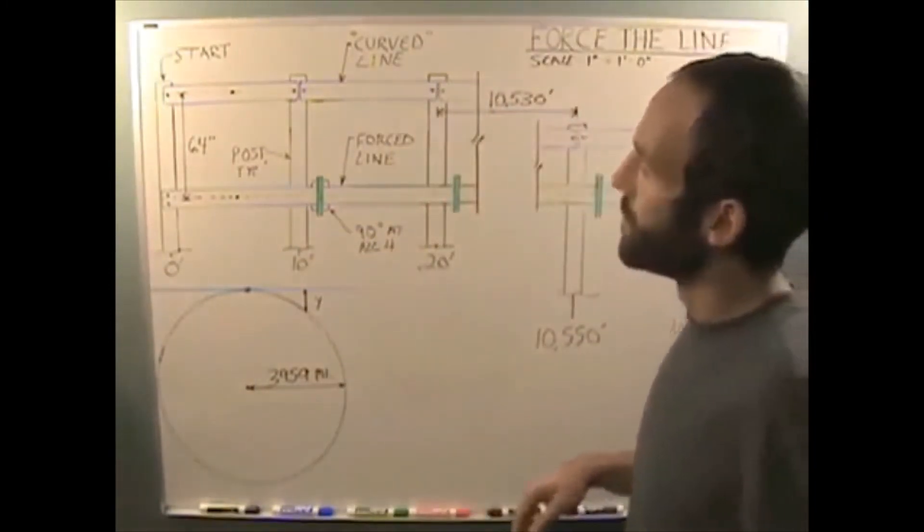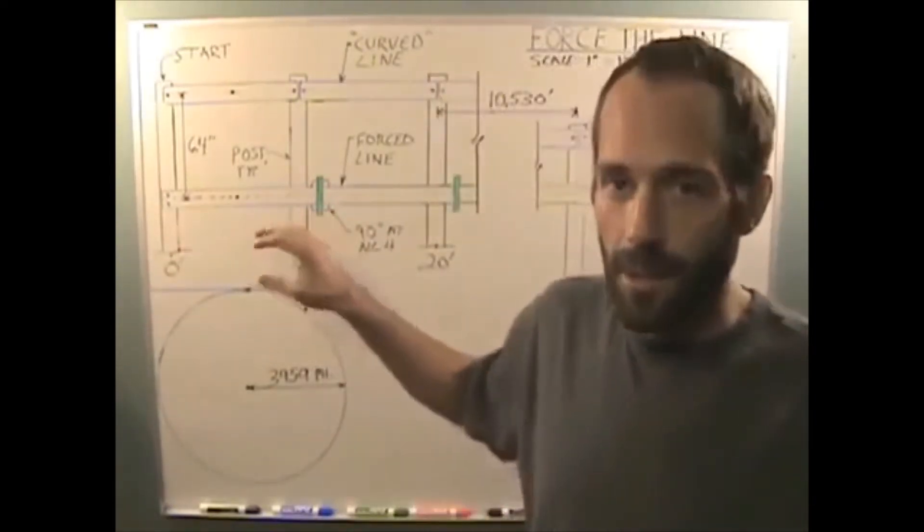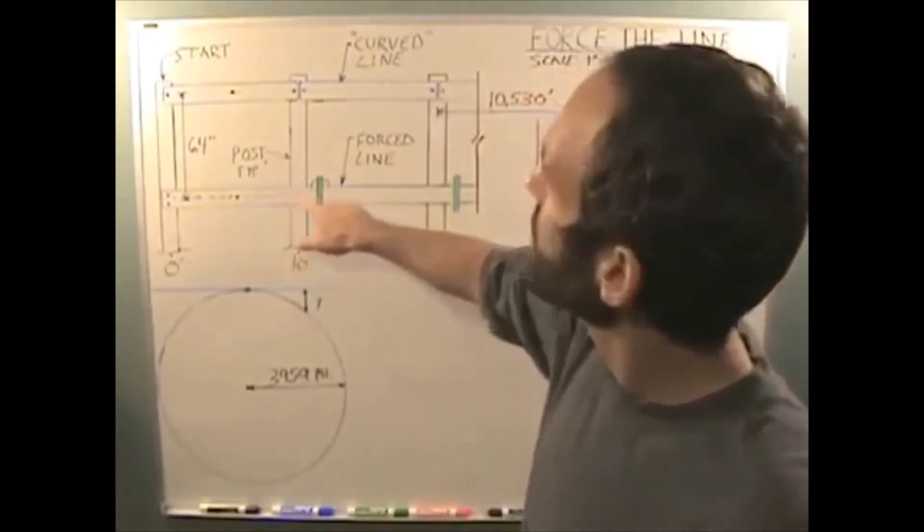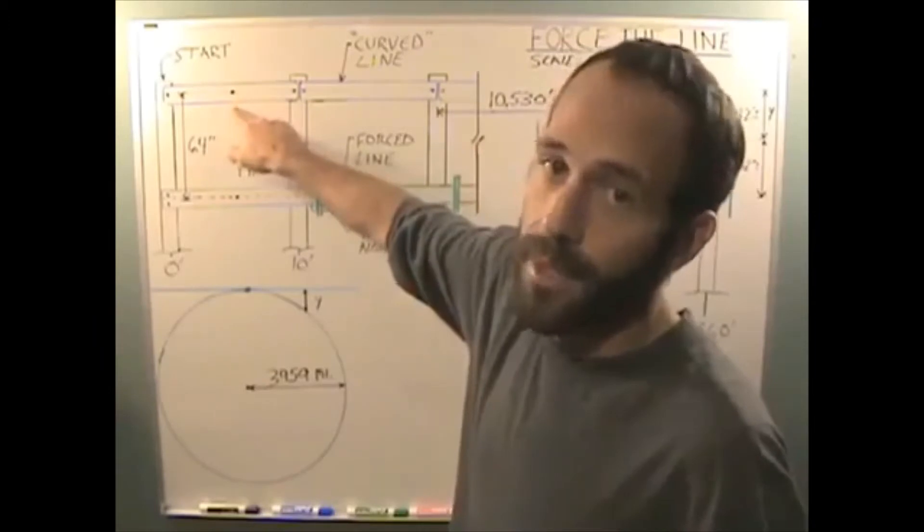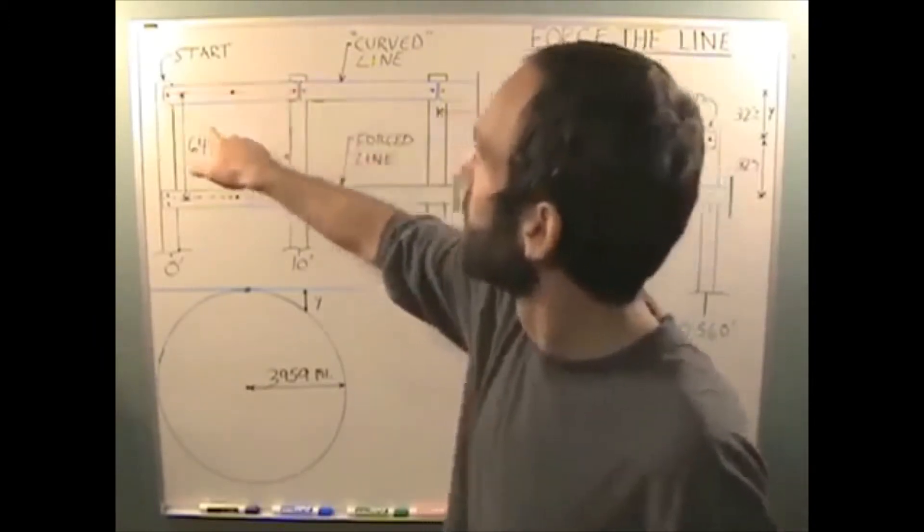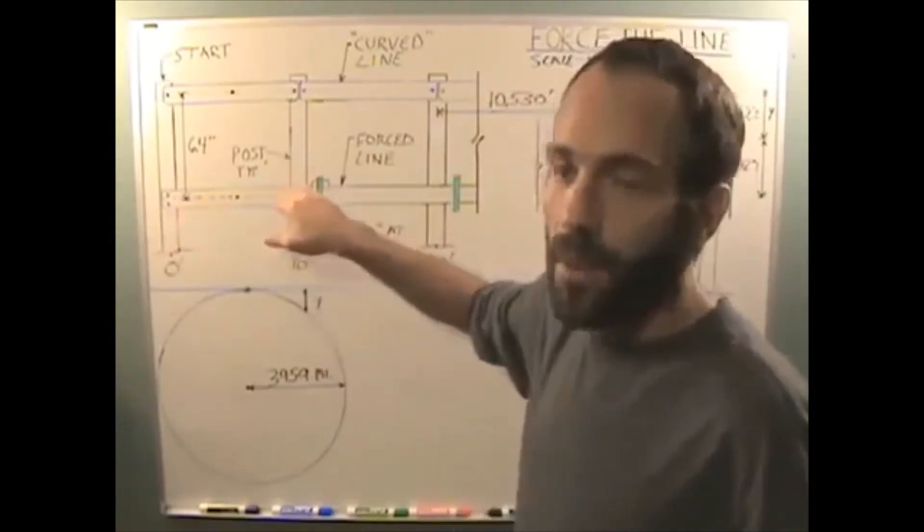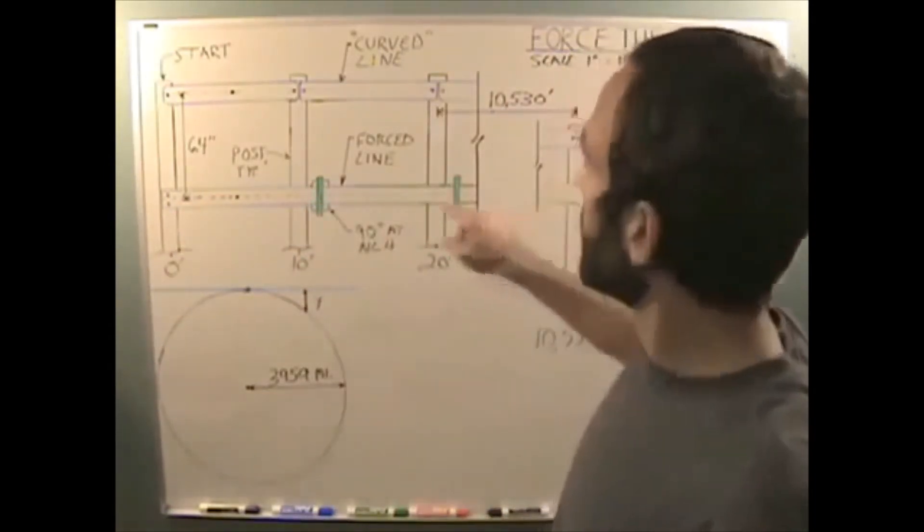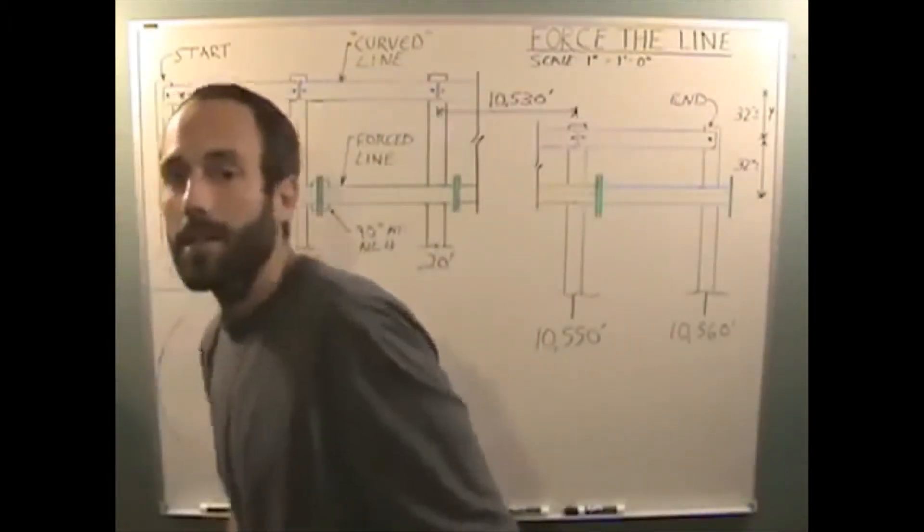Then, what we do is we use a rectilineator type device below it to force the line. This very first beam we construct right here is perfectly parallel or as close as we can get to perfectly parallel to this beam. It's leveled too. We level that beam.